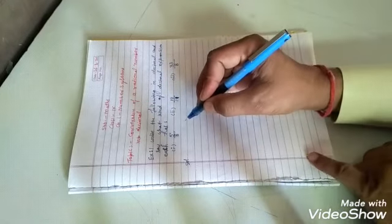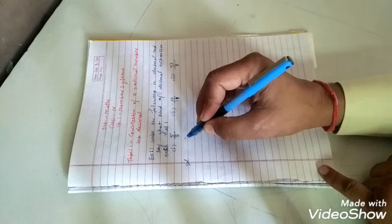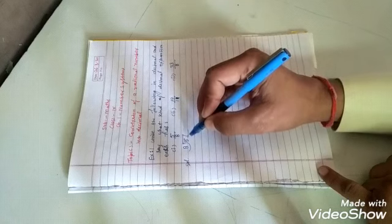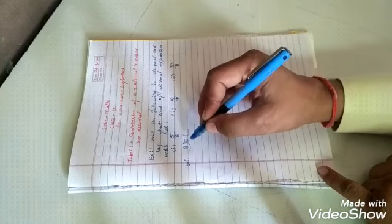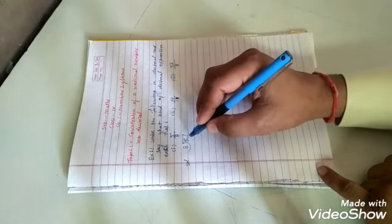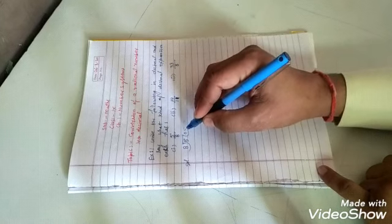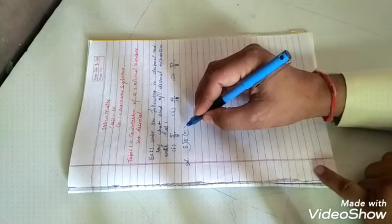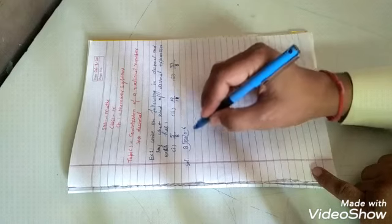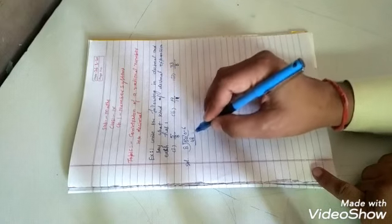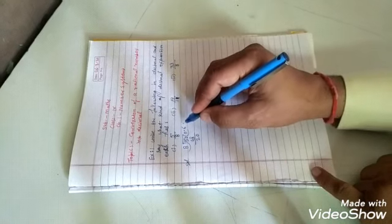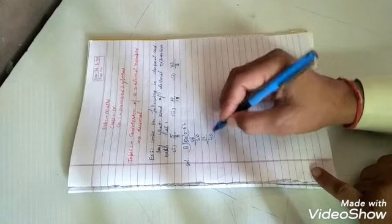To convert 5 upon 8 to decimal, we divide 5 by 8. Since 5 is not divisible by 8, write 0, take decimal, then write 0. Now 8 times 6 is 48. Subtract 48 from 50, remainder 2. Write 0. 8 times 2 is 16, remainder 4. Write 0. 8 times 5 is 40.